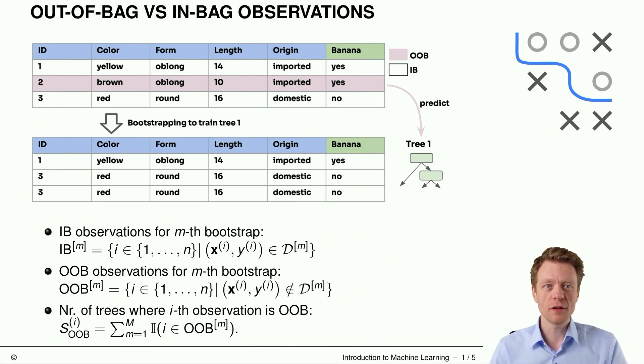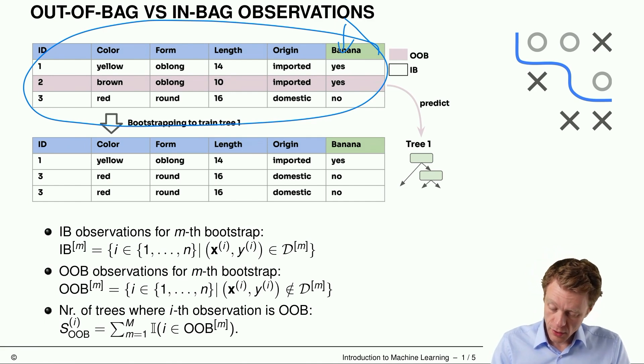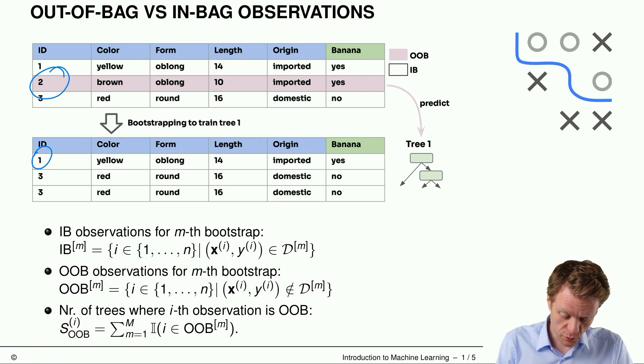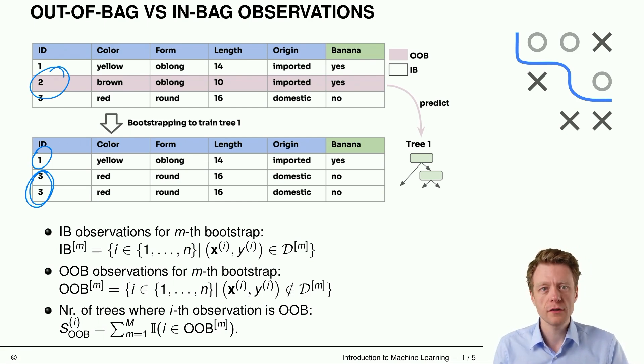Here you see first the visualization and then a more formal definition of what happens here. Remember that in bagging we use Bootstrap to draw several datasets from the original entire dataset with replacement. Let's say we start with this dataset here. It has three observations, one, two, and three. The column banana is the target variable, the others are features. And in the first Bootstrap iteration we sample three observations from these three observations, but with replacement. So in this case it happens that the second observation does not make it into the Bootstrap sample.